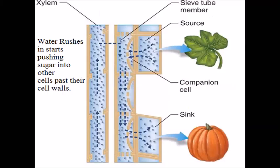This is a nice simplified diagram. We've got the source making the sucrose and it's moving into the phloem and water is moving out of the xylem to push that fluid down.